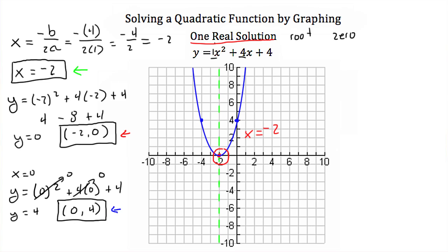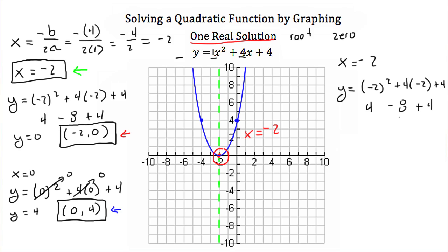Now we can test this. If we plug in x is equal to negative 2 into our quadratic, we should get y is equal to 0. So we'll have negative 2 squared plus 4 times negative 2 plus 4. Negative 2 squared is 4, 4 times negative 2 is negative 8, and then plus 4. 4 minus 8 is negative 4, plus 4 is indeed 0. So our solution of y is equal to x squared plus 4x plus 4 is x is equal to negative 2.